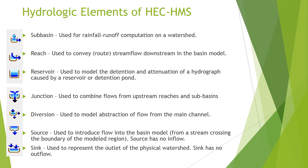These are the hydrologic elements of HEC-HMS: subbasin, reach, reservoir, junction, diversion, source, and sink — all with different functions. The subbasin is used for rainfall-runoff computation on a watershed. The reach is used to convey streamflow downstream in the basin, usually representing rivers or streams. The reservoir is used to model the detention or attenuation of a hydrograph caused by a reservoir or detention pond. The junction combines flow from upstream reaches and subbasins. The diversion models abstraction of flow from the main channel. The source introduces flow into the basin model, and the sink represents the outlet of the physical watershed.